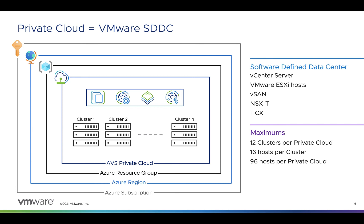The private cloud contains the vCenter server for management, all ESXi hosts, vSAN, NSX-T, and optionally HCX. Each additional private cloud deployed will have a separate set of those management components. For each private cloud created, there's one vSAN cluster by default — you can add, delete, and scale clusters. The minimum number of hosts per cluster is three. Each private cloud can support up to 12 clusters, with a maximum of 16 hosts per cluster or 96 hosts per private cloud. If multiple clusters are deployed within the same private cloud, the management components will only live on the first cluster; all additional clusters will be fully available for workload VMs. vSphere HA and DRS are enabled by default.